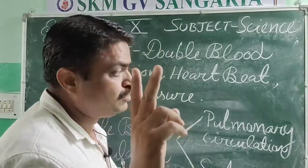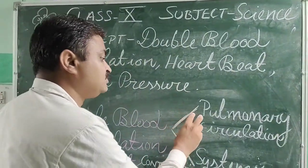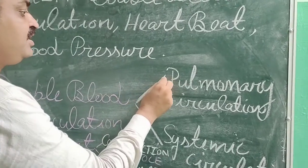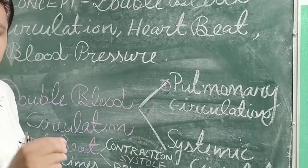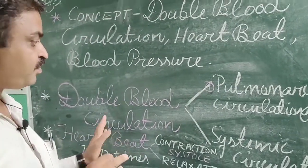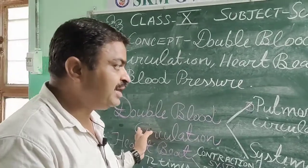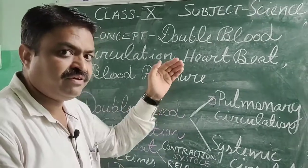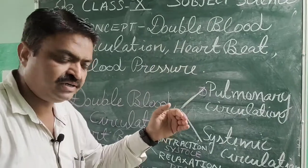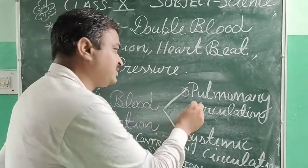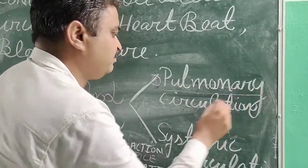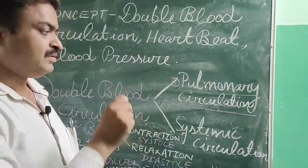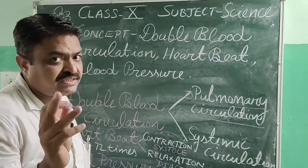Double circulation includes two circulations. The first is pulmonary circulation, in which blood is passed from the heart towards the lungs and from the lungs back towards the heart. This circulation is known as pulmonary circulation.